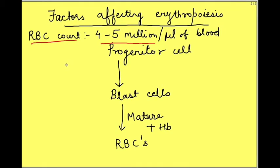So what are the requirements for this? For RBC production, each of these stages of erythropoiesis should progress normally. Progenitor cells should divide and form blast cells. Blast cells will mature and there will be incorporation of hemoglobin to finally produce mature RBCs.